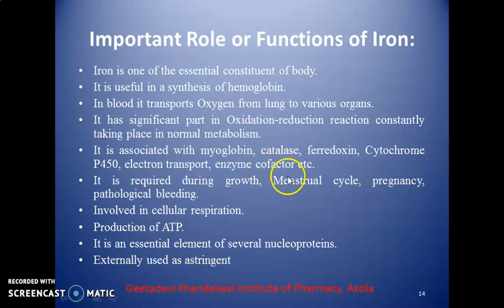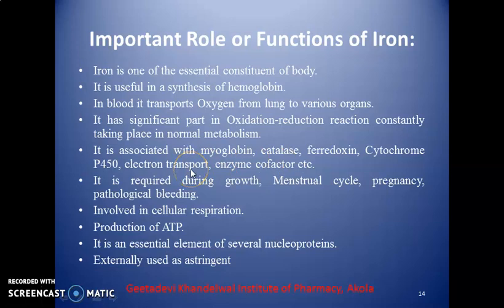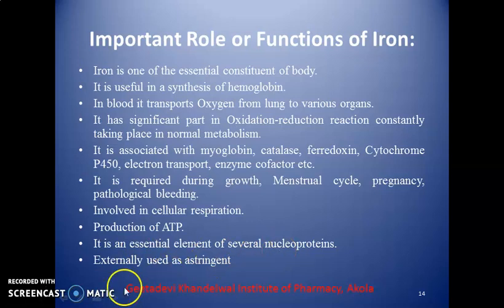Iron is associated with myoglobin, catalase, ferroxene, cytochrome oxidase P450, the electron transport chain, and enzyme cofactors. It is necessary for the synthesis of adenosine triphosphate (ATP). Iron is required during growth, menstrual cycle, pregnancy, and pathological bleeding. It is involved in cellular respiration, which requires ATP production. Iron is an essential element of several nucleoproteins and is externally used as an astringent. For the treatment of anemia, iron preparations are administered.